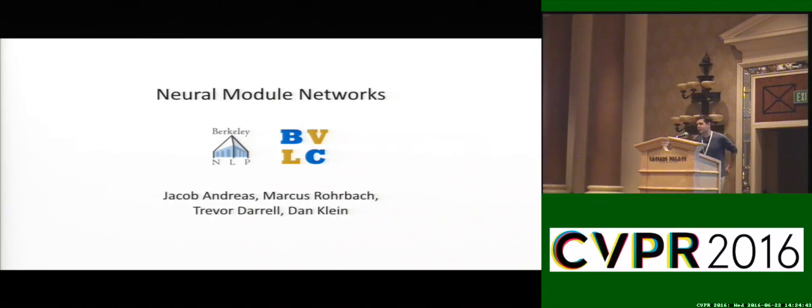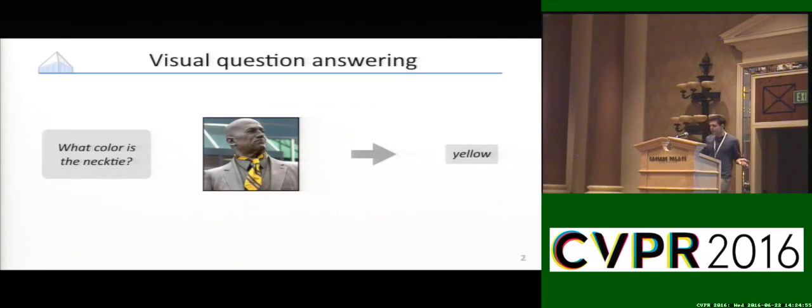This is yet another talk about visual question answering. What we're specifically going to be looking at is a model for answering questions by building neural networks on the fly based on the syntactic structure of the question. Here's the task. We have a question, we have an image, we want a map to an answer.